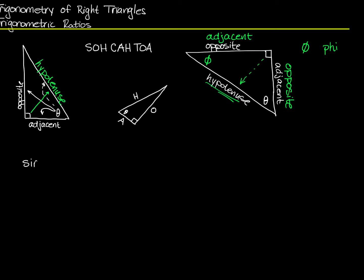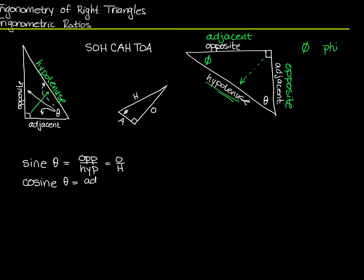First, by definition, the sine of an angle is the length of the side opposite that angle divided by the length of the hypotenuse — we could just say O over H. The cosine of theta is the length of the adjacent side divided by the length of the hypotenuse, or A over H.